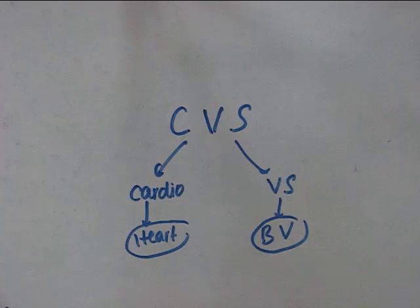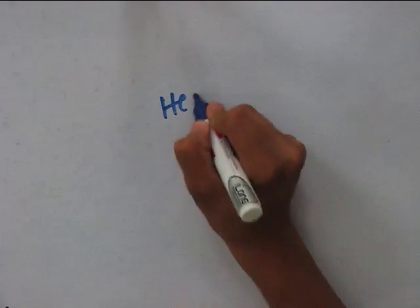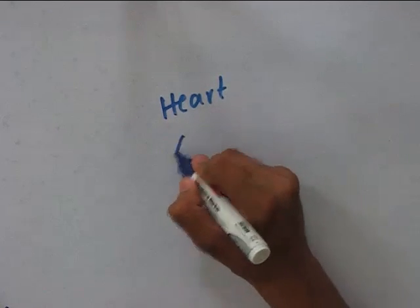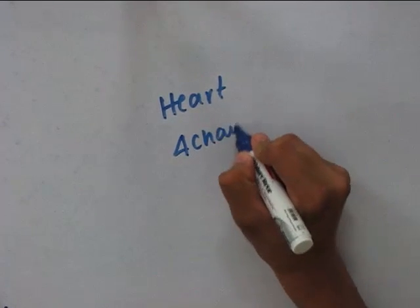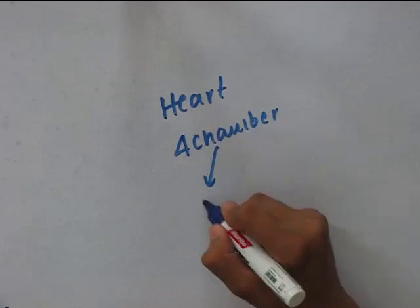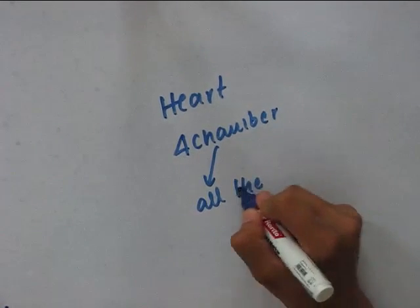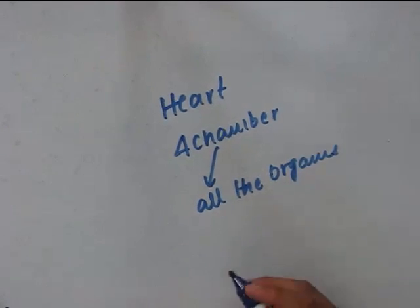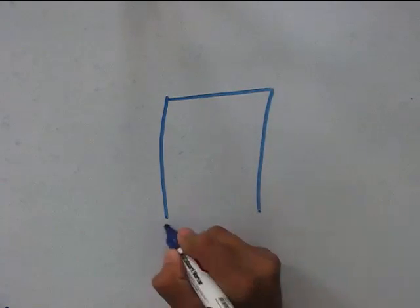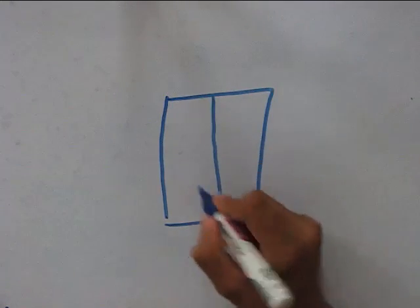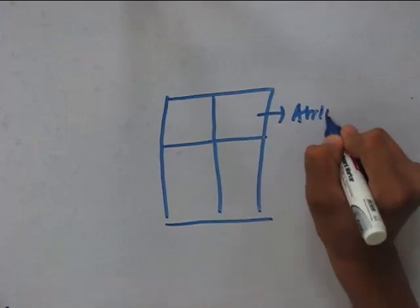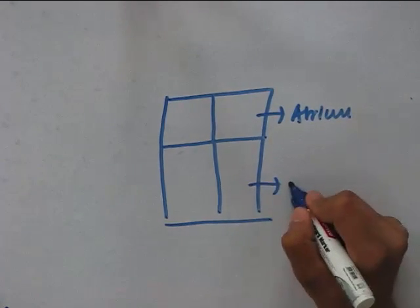Let's study about them separately. The heart — we all know it is a very important organ in our body. It is the organ which pumps blood to all the organs of the body. Now let's study about the functional organization of the heart. The heart is a four-chambered organ. Let's consider this piece of rectangle to be the heart and divide it into four chambers. The upper two smaller chambers are the atria and the lower two bigger chambers are the ventricles.